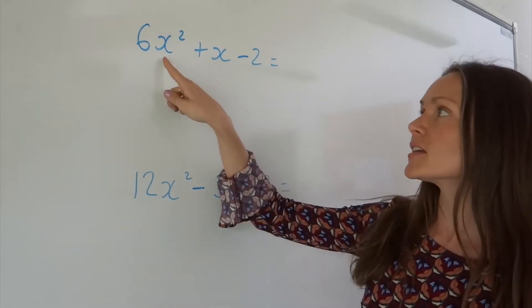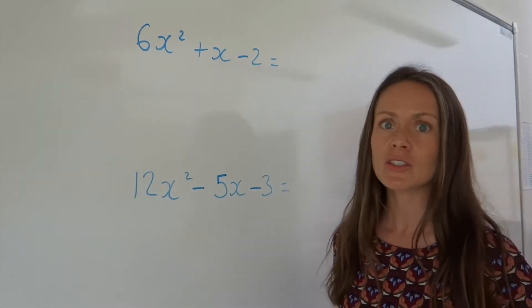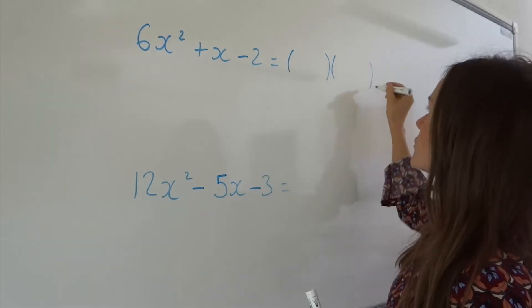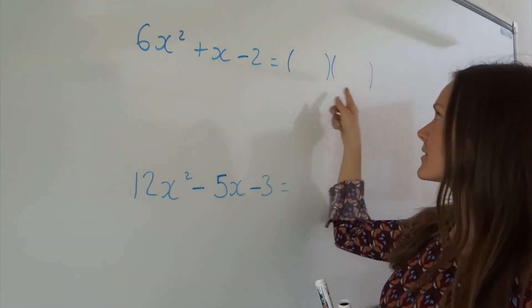When you see x squared, x and a number, like in these questions, remember that means we're going to be factorising into two sets of brackets like this.